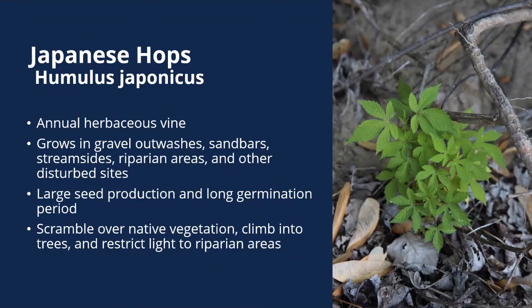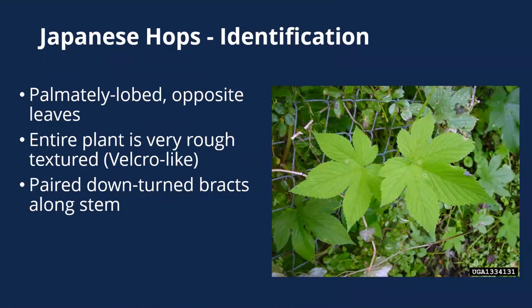Japanese hops is an annual herbaceous vine that grows in gravel outwashes, sandbars, riparian areas, and other disturbed sites across the state. It has a long and large seed production and a long germination period, producing a lot of seedlings throughout its growing season. It scrambles over native vegetation, climbs into trees, and can restrict light to riparian areas, which may be important for certain wildlife to nest or certain native plants to grow — giving it a particular impact on some of our rare species.